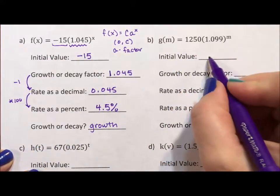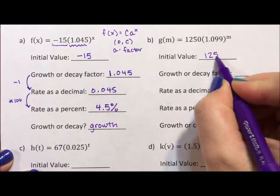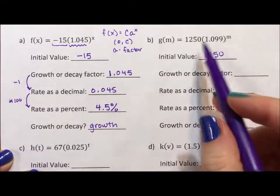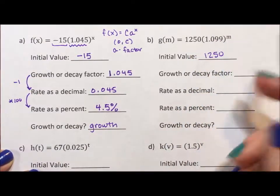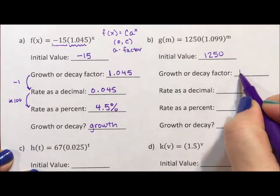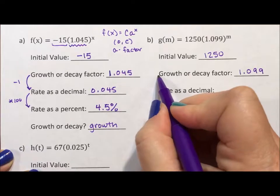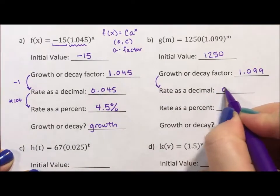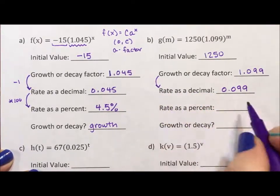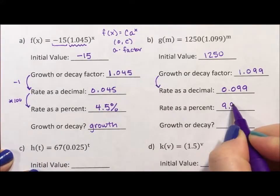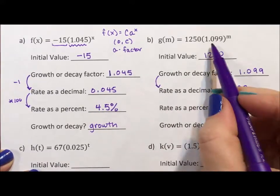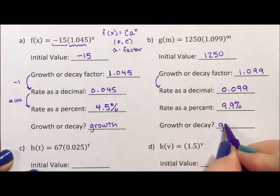So for the next one, our initial value is 1,250. It's the number outside the parentheses, the number without the exponent attached. The growth factor is 1.099. To go down, we subtract 1, so we get 0.099. And then we multiply by 100 to get 9.9%. And because this is greater than 1, again, this is growth.